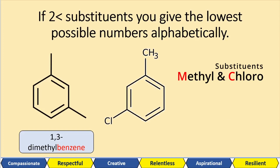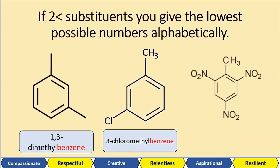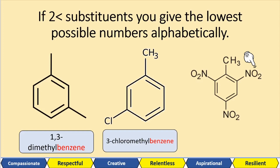This one — we've got a methyl group and we've got a chloro group. Chloro comes before methyl — C comes before M. So we're going to have 3-chloromethylbenzene. Here we want the lowest number possible and also alphabetical order. So we've got a nitro and we've got a methyl. M comes before N. Our nitro will be in position one — if we pick the nitro next to the methyl, the methyl will be in position two, whether we pick the nitro on the left-hand side or the right-hand side, because these molecules are rotating.